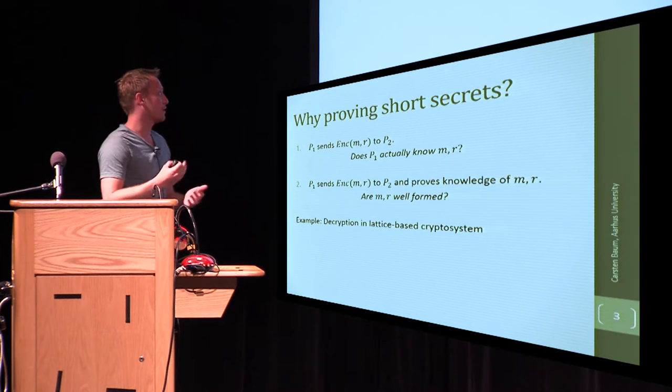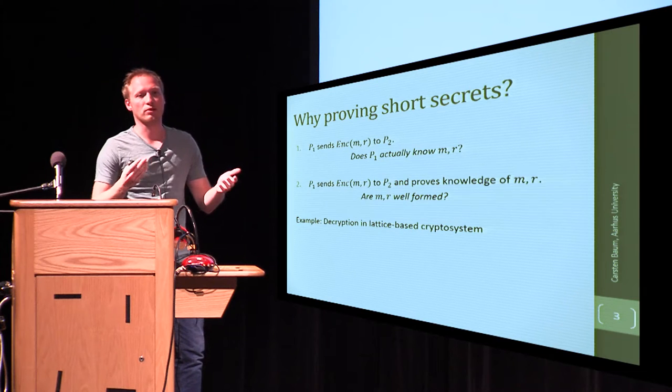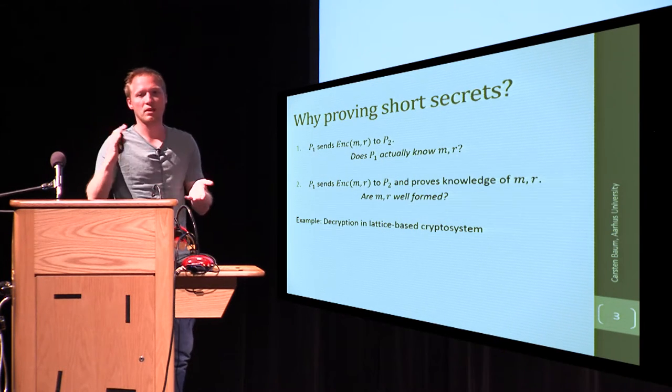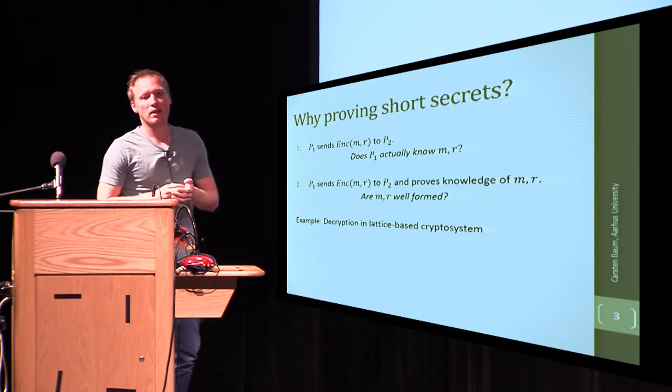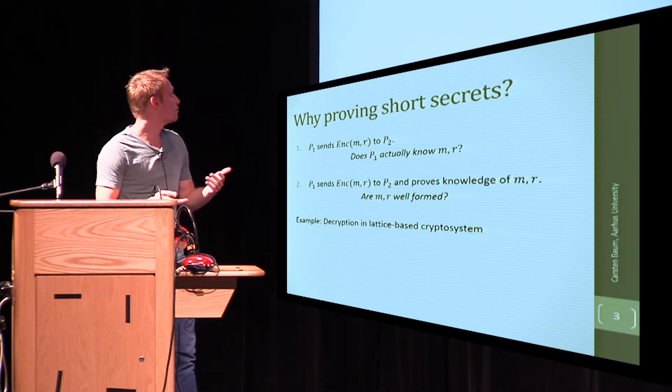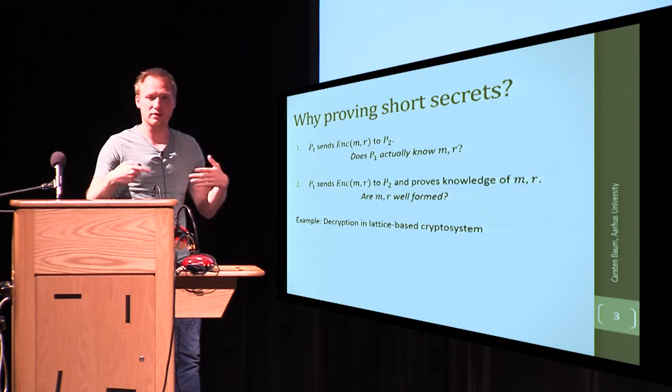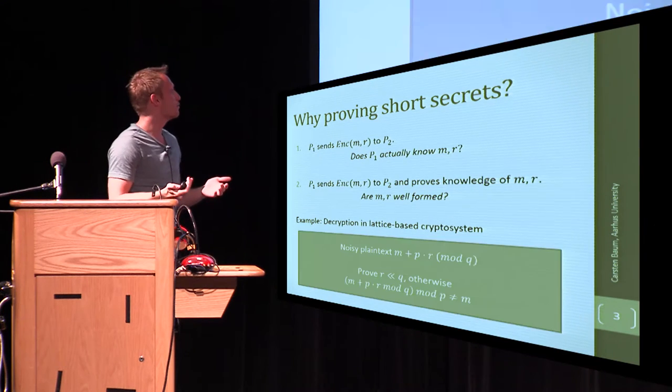So, for example, if you think about lattice-based cryptosystems, your encryption procedure will always include something like sample from a Gaussian distribution or from some small interval. And you will actually have to prove in zero knowledge and in an interactive protocol that this is fulfilled.